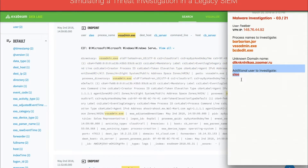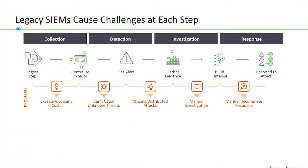At this point, the investigation is becoming both tedious and complex. It now involves multiple users, processes, and network connections. In a situation like this, it is hard for an analyst to quickly and fully scope an incident. This is what analysts struggle with day in and day out. The list of legacy SIM challenges includes excessive logging fees from volume-based pricing models, an inability to detect unknown threats due to reliance on correlation rules and a high rate of false positives, missed distributed attacks that spread across different credentials, devices, and IP addresses, and time-consuming manual investigations and incident response procedures.